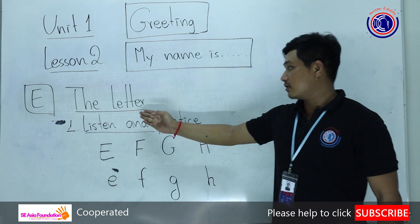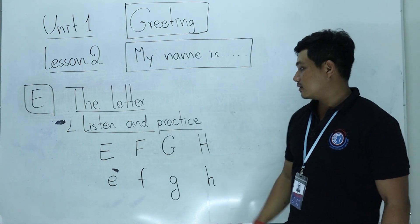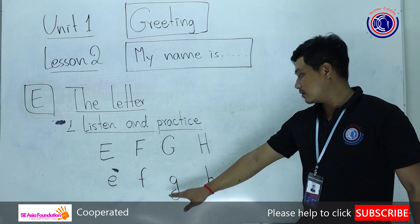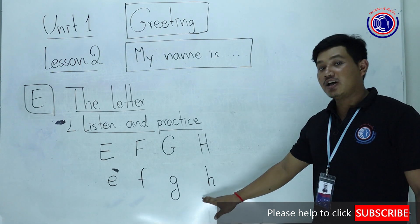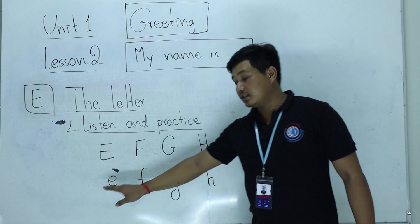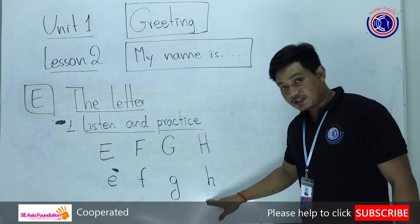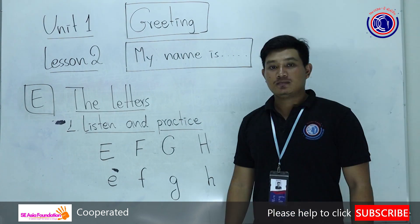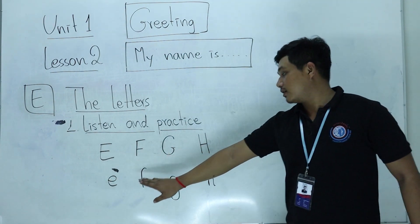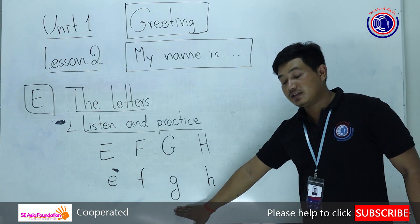Part E. The letter. Listen and practice. E, F, G, H. One more time: E, F, G, H. Repeat after me: E, F, G, H.